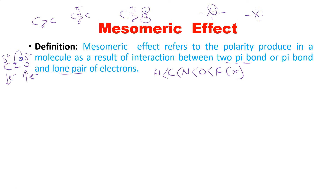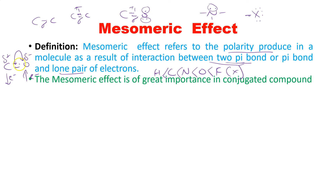The electron pair transfers onto oxygen. This is said to be the mesomeric effect, where polarity is produced due to interaction of a pi bond and a lone pair of electrons. You can see the lone pair of electrons on oxygen and the pi bond here. In inductive effect there were only sigma electrons, but in mesomeric effect it is pi electrons or pi bonds.